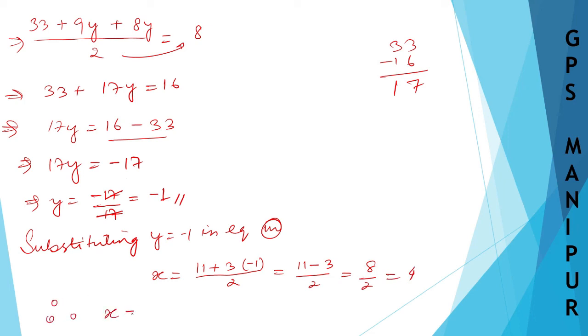Therefore, x is equal to 4 and y is equal to minus 1. I hope the answer is correct. Thank you so much, we will meet in the next video.